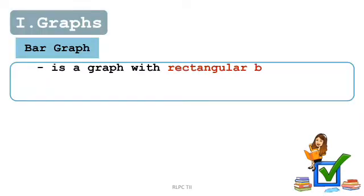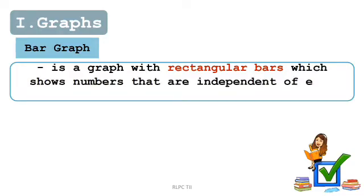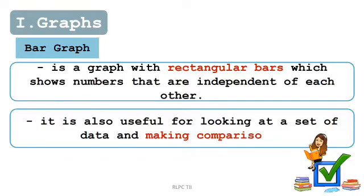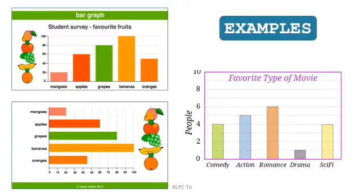Bar graph is a graph with rectangular bars which shows numbers that are independent of each other. It is also useful for looking at a set of data and making comparisons. Bar graphs can be vertical or horizontal. In analyzing bar graphs, you have to look at the title or what is it all about, the labels, and the legend.